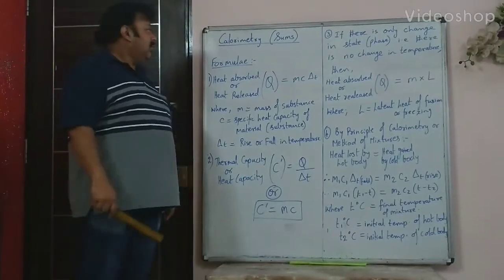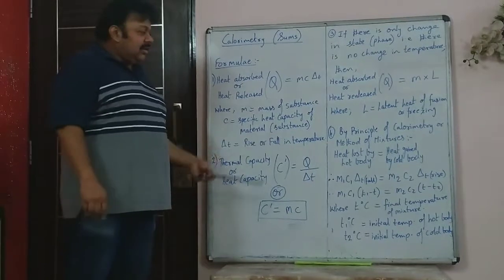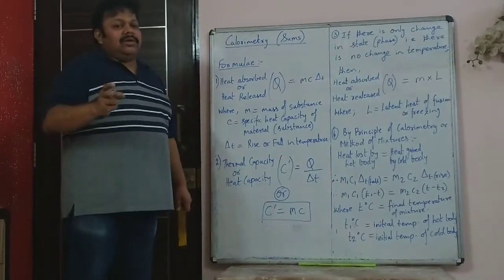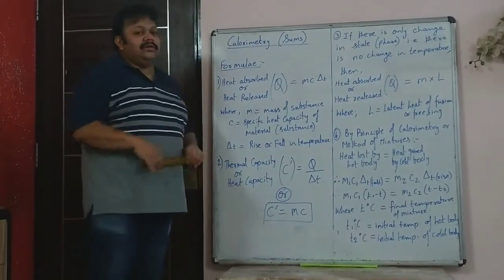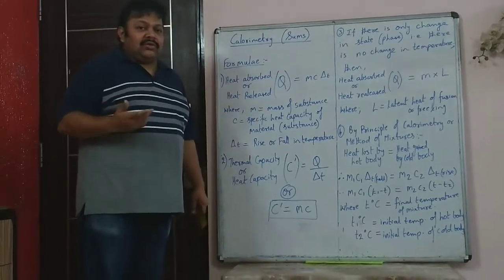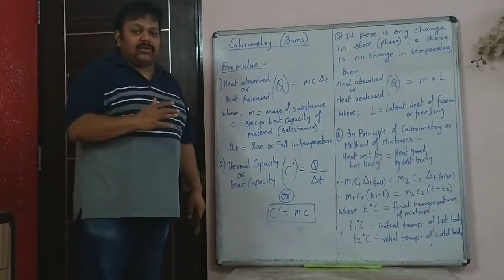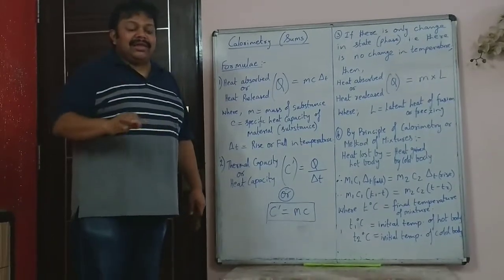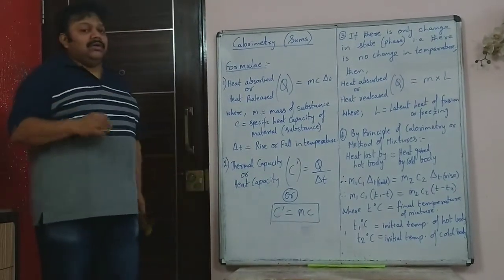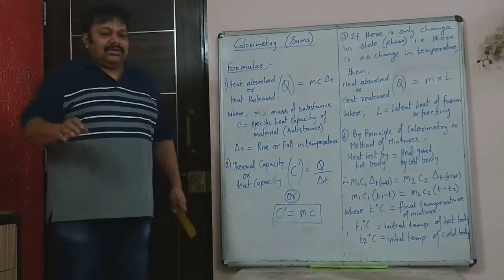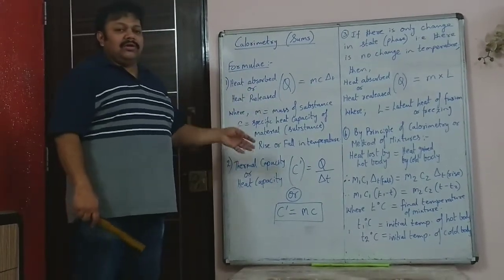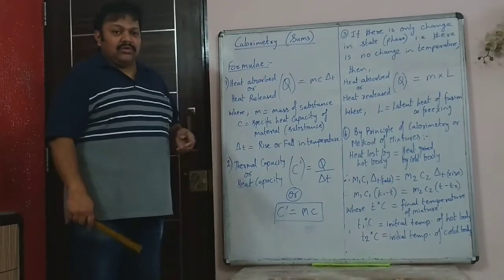Today we will start with the sums of calorimetry. In this chapter we will first write down the formulae. One question of four marks or two sums of three marks each — that means six marks — is always asked in calorimetry. Once you have understood the sums, what I have given in our Anish Tutorial book is more than enough. Nothing beyond that will come in the board exam, so this is a scoring chapter. We will also do some homework sums in the Zoom session before the tests.